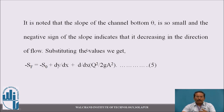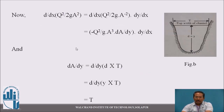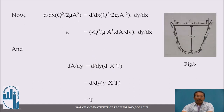So the equation becomes: -S_f = -S₀ + dy/dx + d/dx(Q²/2gA²). This is equation 5. Now we concentrate on the term d/dx(Q²/2gA²). Differentiating this, we get: -Q²/(gA³) · (dA/dy) · (dy/dx).